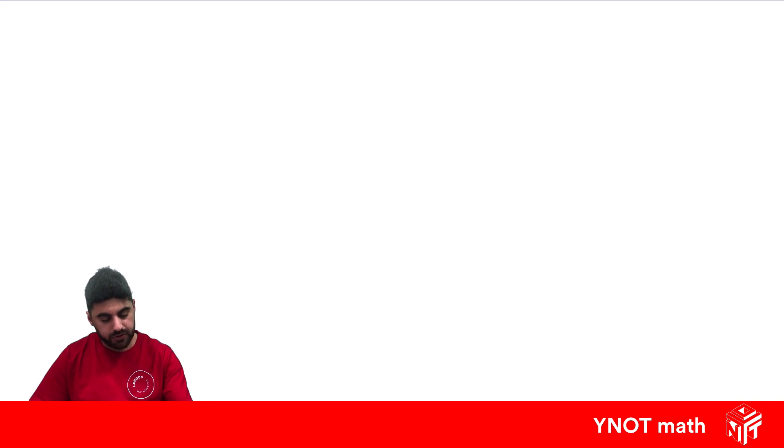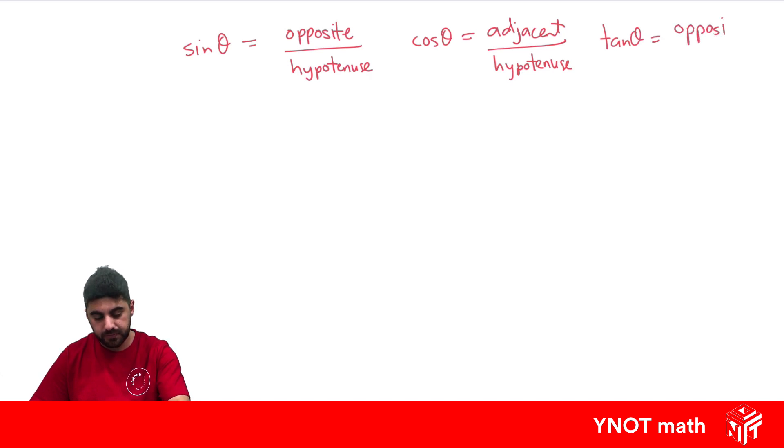Let's learn a few more. Sine of some angle is the ratio of the opposite and the hypotenuse. Cos of an angle equals the adjacent side divided by the hypotenuse. And tan of an angle equals the opposite side divided by the adjacent side.